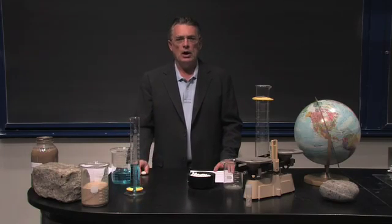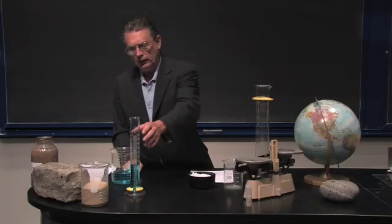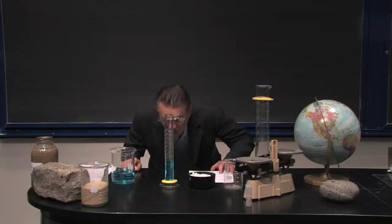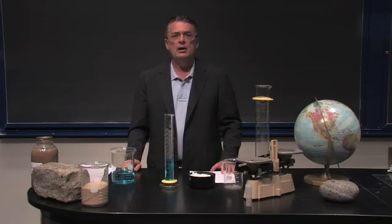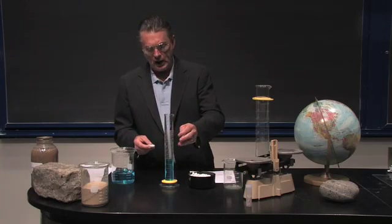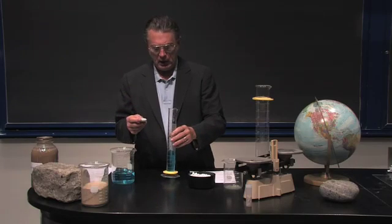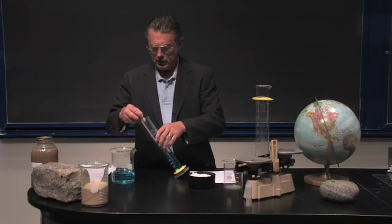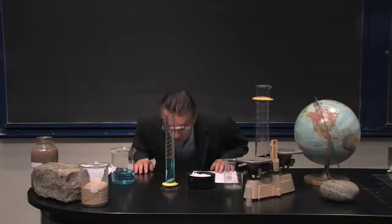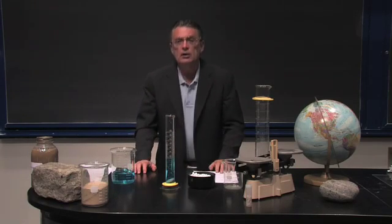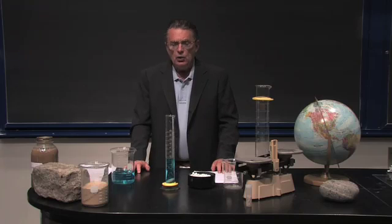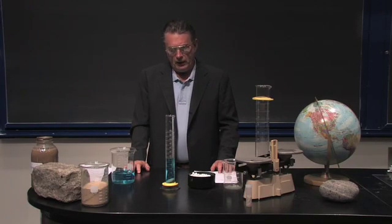If one were to try to determine the volume of this pebble, most people understand that if we have a graduated cylinder with, in this case, 110 milliliters of water, by dropping the pebble into the water the water level will rise, and we should be able to determine the volume of the pebble by difference. So let me drop this in here, and we can see that the water level has gone up, and the new water level is 130 milliliters, meaning that the difference — 130 minus 110 — 20 milliliters, is the volume of the pebble.